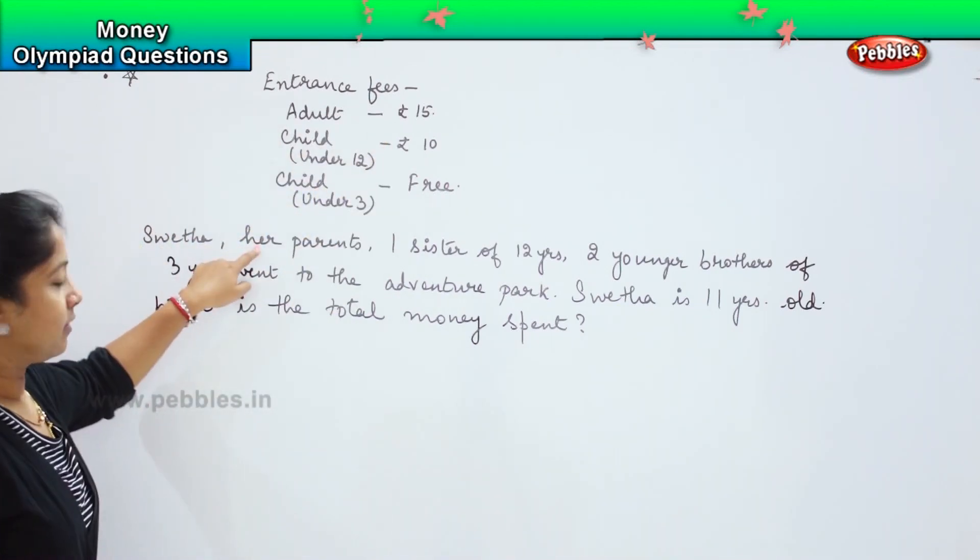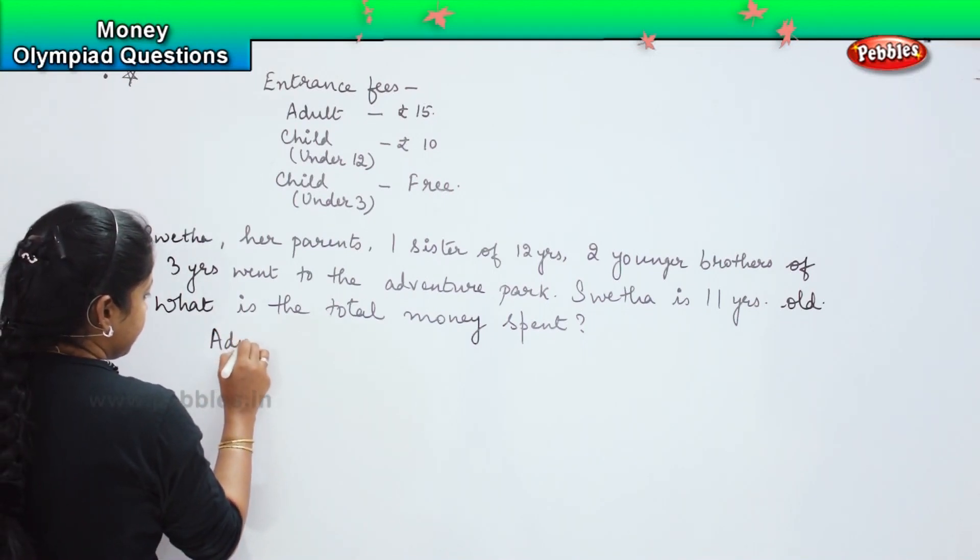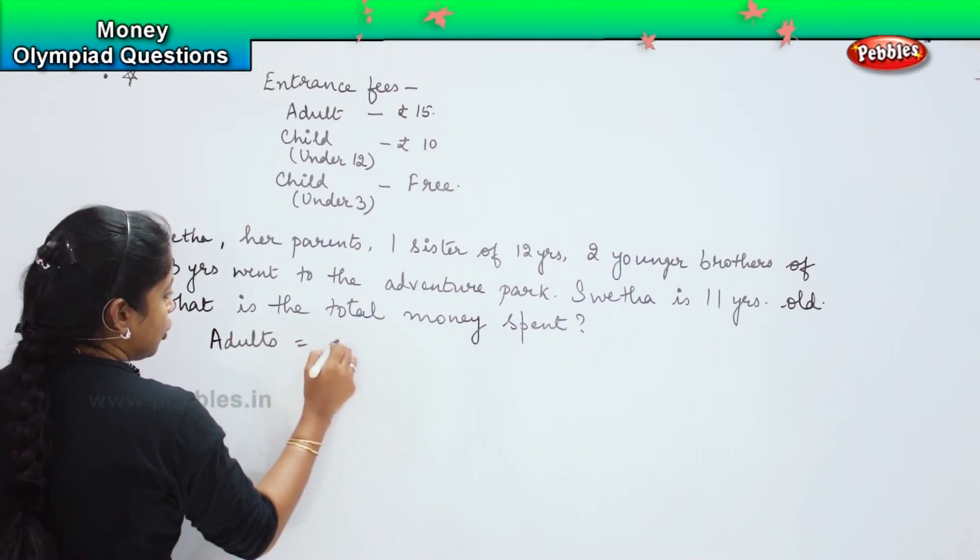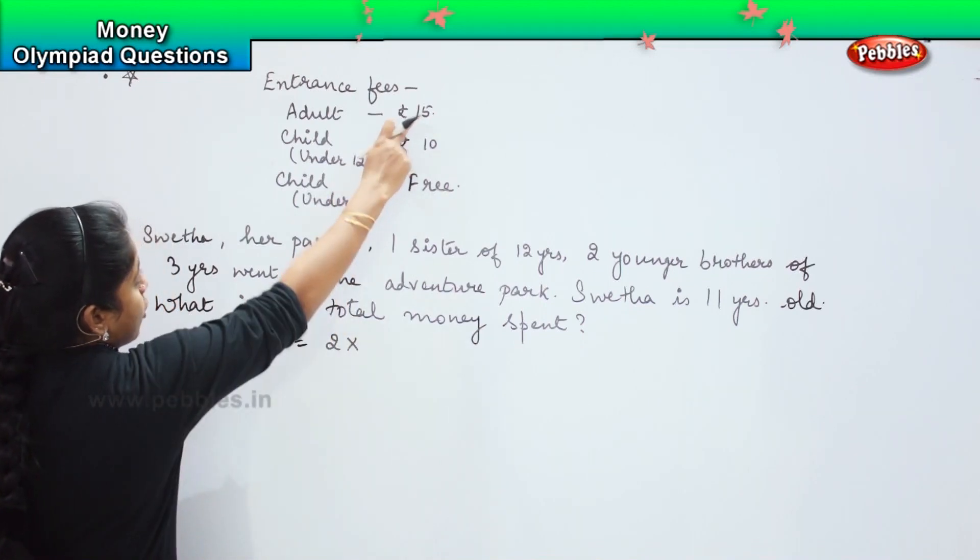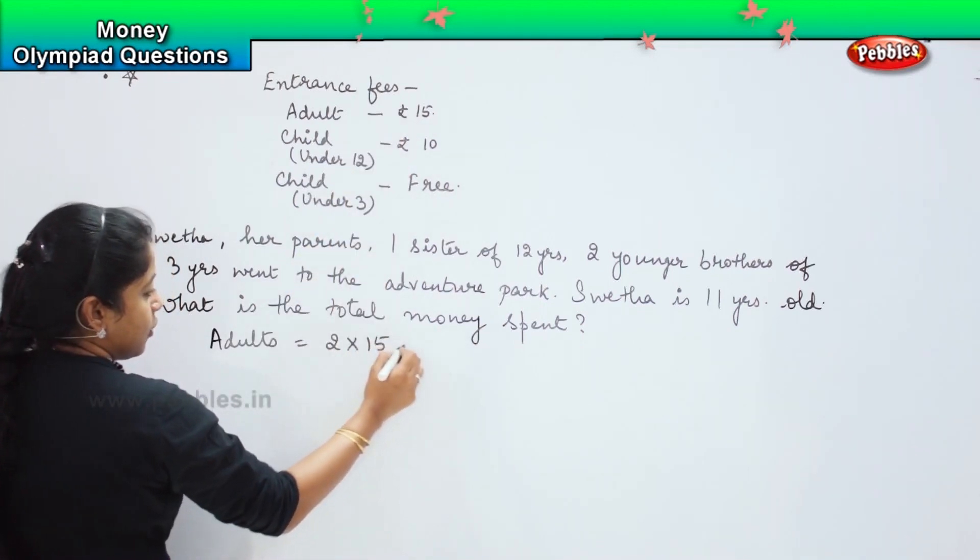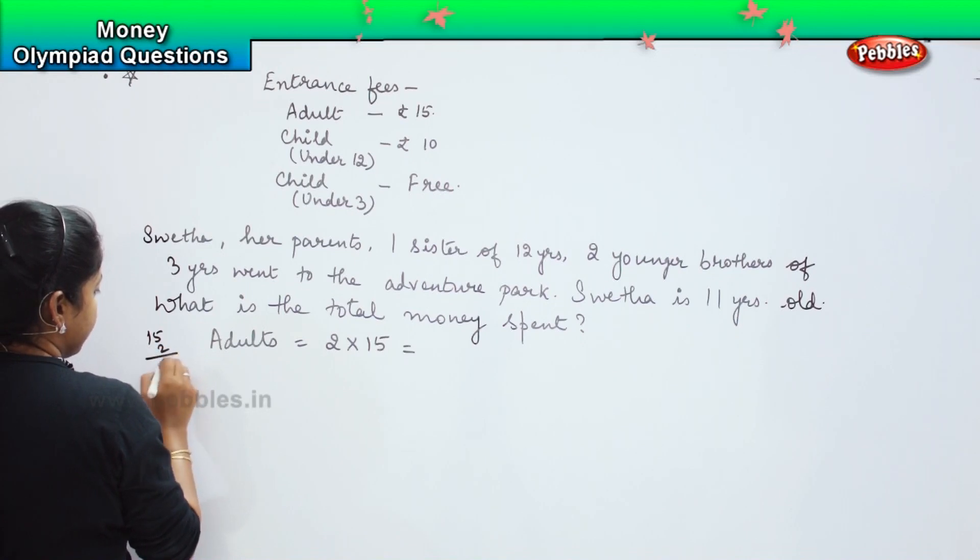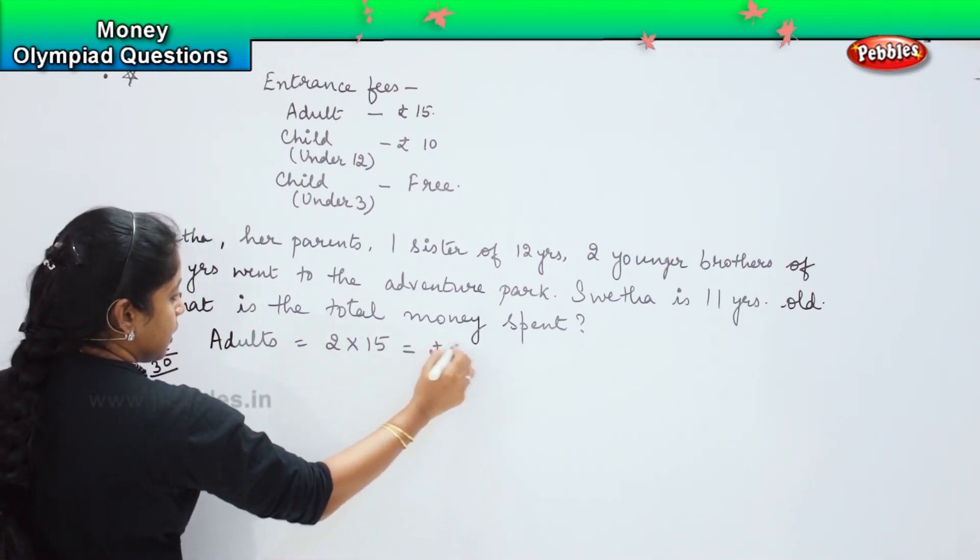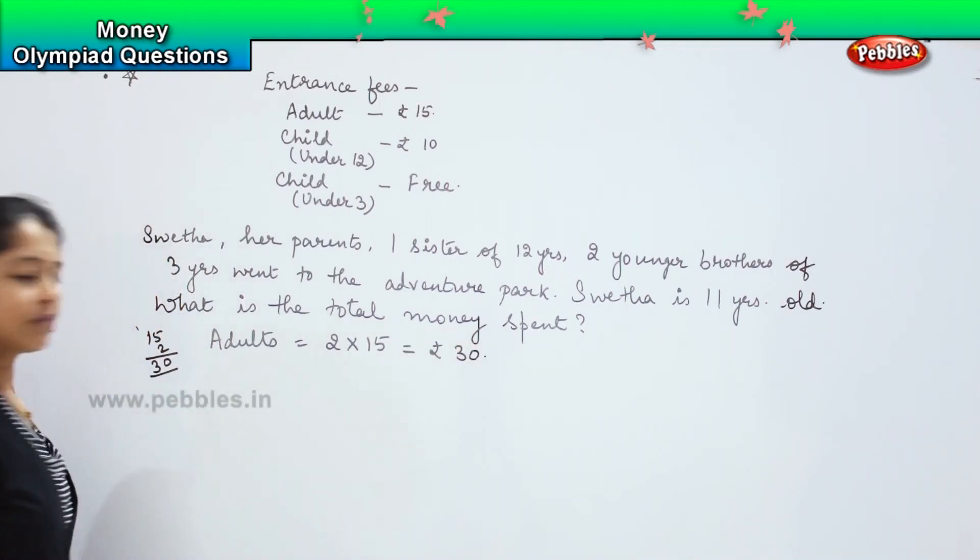How many adults are there? The parents are there. So adults are 2. For 2, what is the fees amount? It is 15 rupees. So 15 into 2 is how much? 2s are 10 and 3. So it is 30 rupees for the adults.